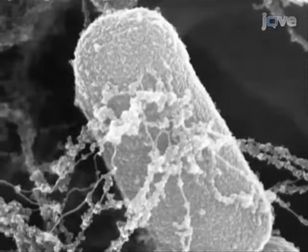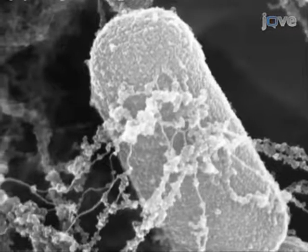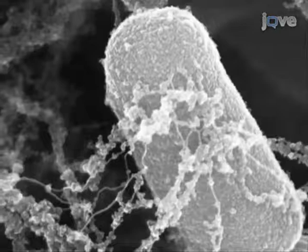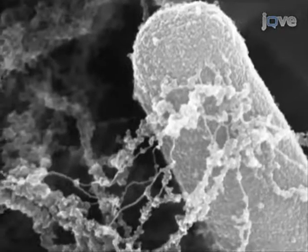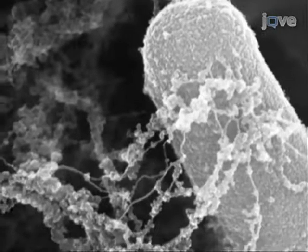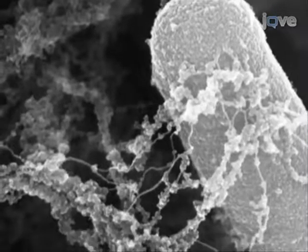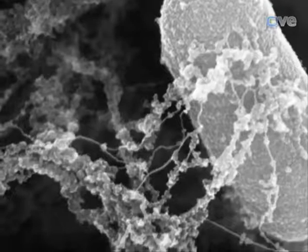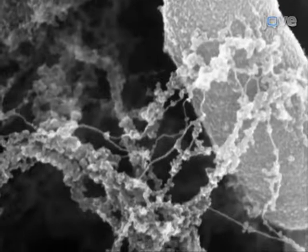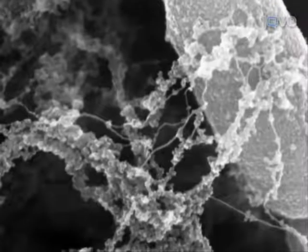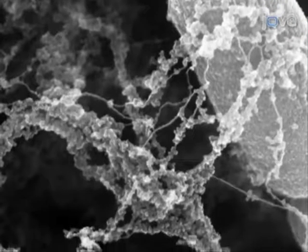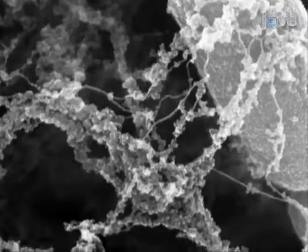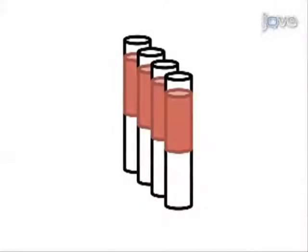Neutrophil extracellular traps, or NETs, are a recently identified mechanism for neutrophil-mediated clearance of pathogens. By releasing a combination of cytoplasmic and granule proteins, as well as chromatin, neutrophils form extracellular fibres that trap pathogens.